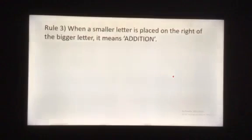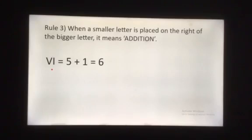Rule 3. When a smaller letter is placed on the right of the bigger letter, it means addition. So let me explain this with this example VI. Here, value of V is 5 and I is 1. When we add 5 and 1, we get 6. So the Hindu Arabic number for this Roman numeral is 6.